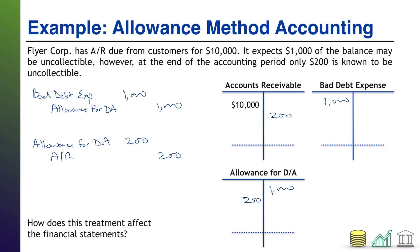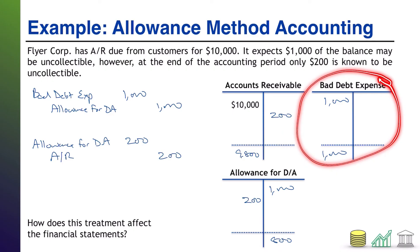That's it for the journal entries — we have the estimate and the write-off. How does this affect the financial statements? AR has a $9,800 balance, bad debt expense has a $1,000 balance, and allowance for doubtful accounts has an $800 balance. I'm talking about two things: the income statement and balance sheet. Net income on the income statement is going to be reduced by $1,000.